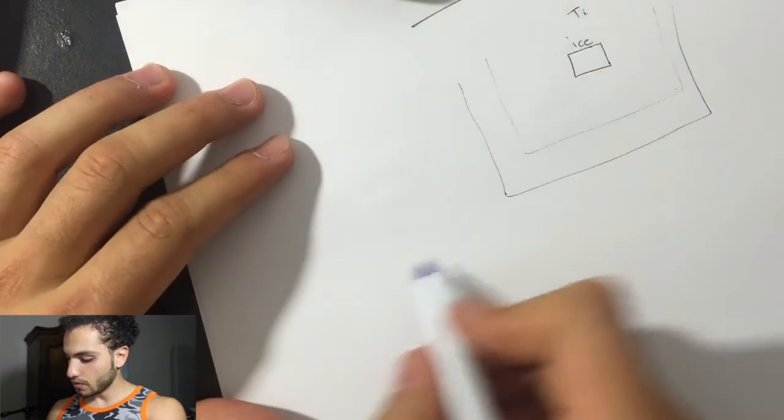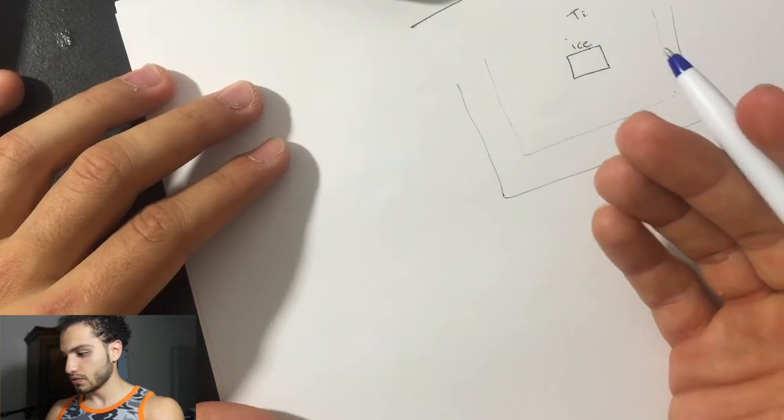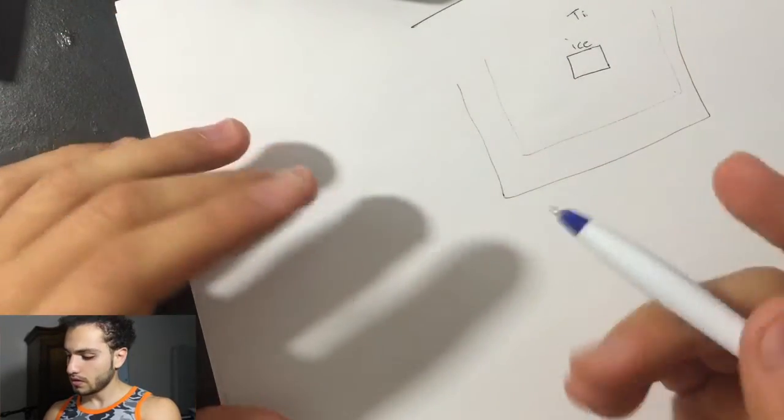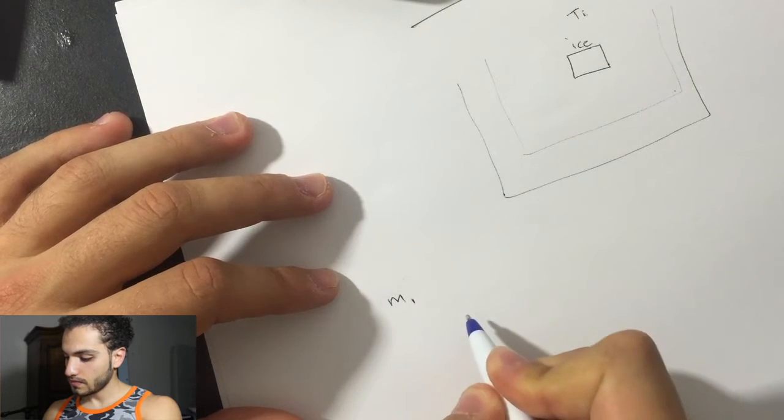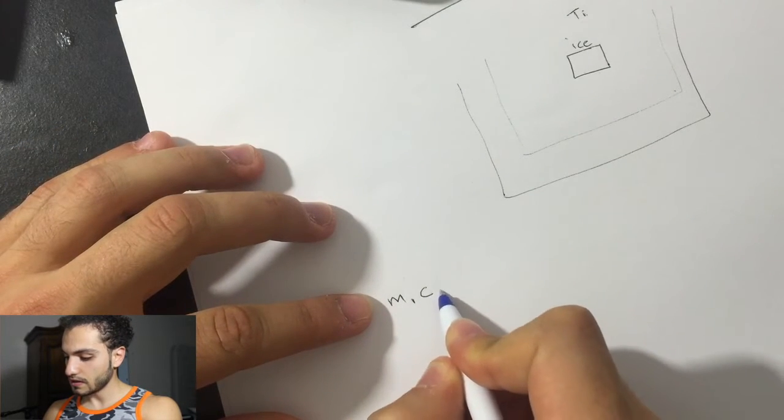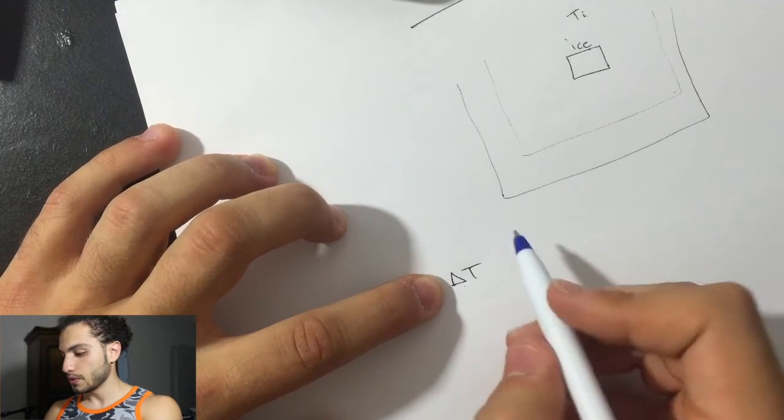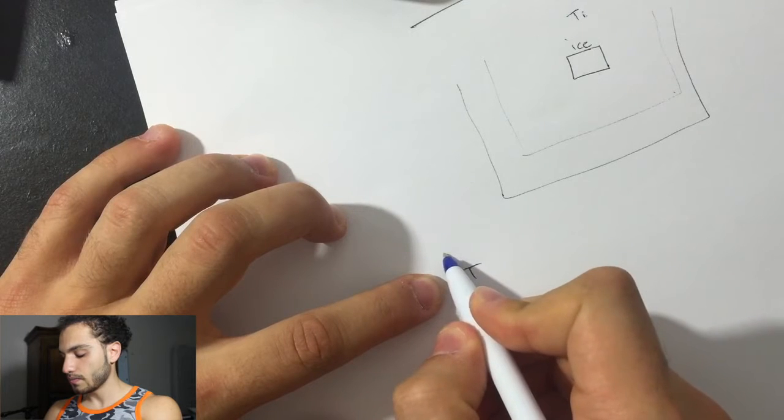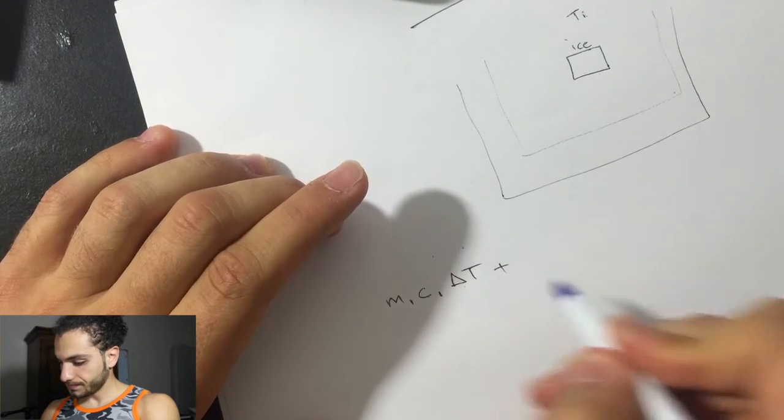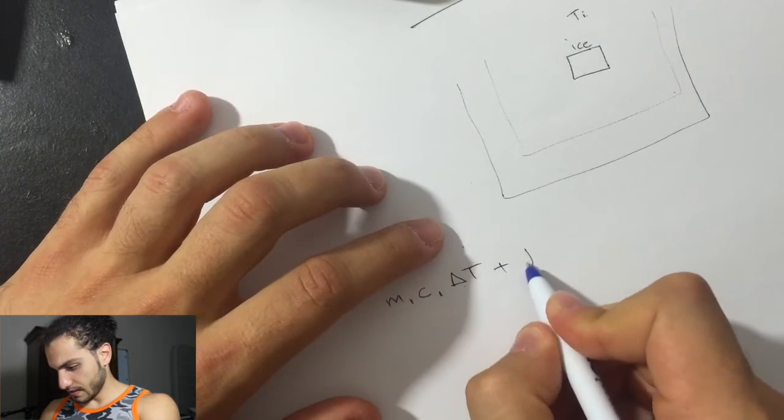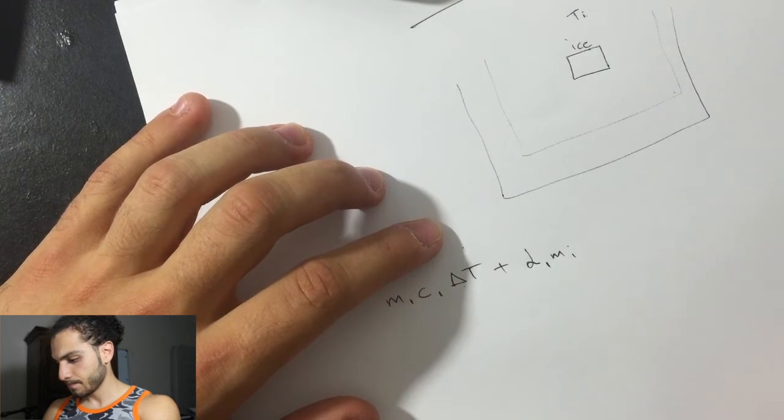Alright, so the ice is going to go first to water before it melts down. So, we're going to do M ice, C ice, specific heat for the ice, delta T. This is the T between the ice before and when it's almost melting. Plus, the latent heat of the ice times the mass of the ice.